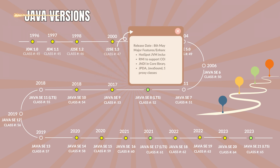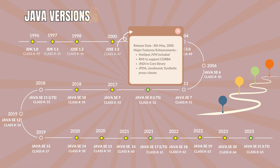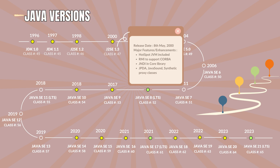Java 1.3 with the class file version 47. It was codenamed as Kestrel. It was released on 8th May 2000. The major features and enhancements are HotSpot JVM included, RMI to support CORBA, JNDI in core library, JPDA, Java Sound, and Synthetic Proxy Classes.